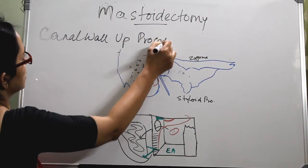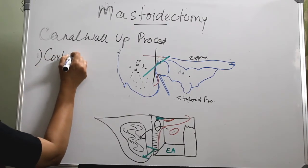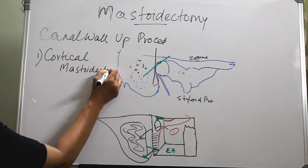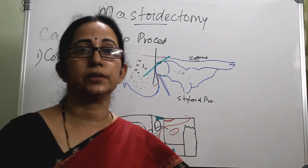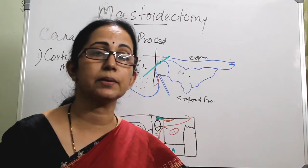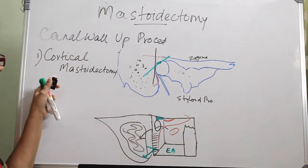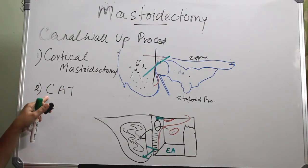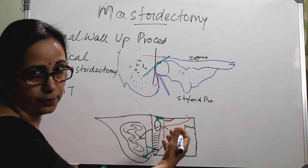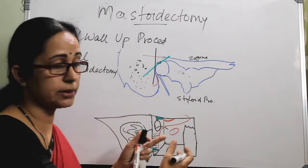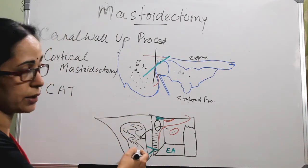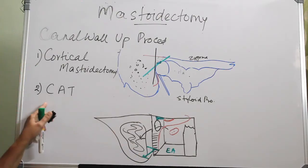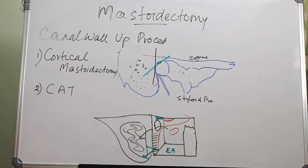Canal wall up procedures include: cortical mastoidectomy, also called simple mastoidectomy, complete mastoidectomy, or Schwartz operation. The second canal wall up procedure is combined approach tympanoplasty — that is cortical mastoidectomy plus anterior tympanotomy, where we reach the tympanic cavity through an anterior approach, and posterior tympanotomy, where through the facial recess we reach the middle ear, combined with tympanoplasty.